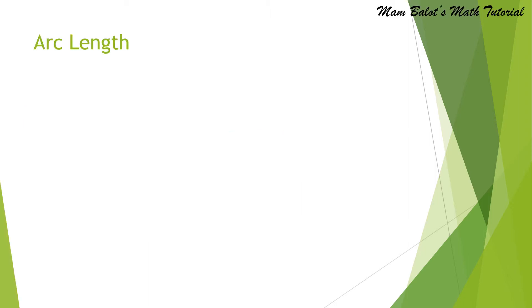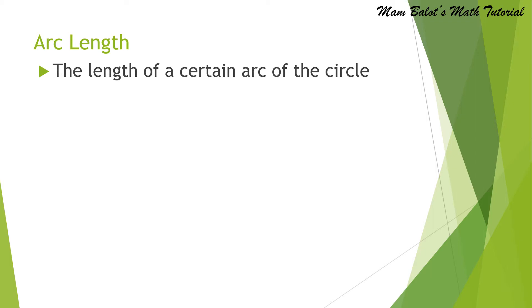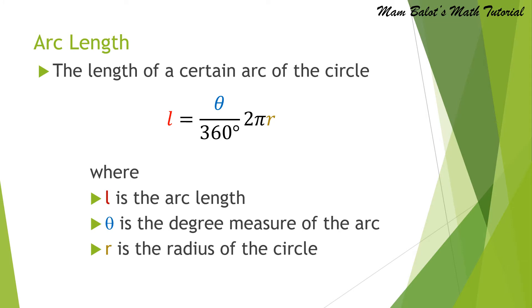What is an arc length? It is just actually the length of a certain arc of the circle, which can be computed as L is equal to theta over 360 degrees times 2 pi R. Where L is the arc length, theta is the degree measure of the arc, and R is the radius of the circle. Observe that 2 pi R is the formula of the circumference of the circle, so the arc length is just a proportion of the circumference of the circle.